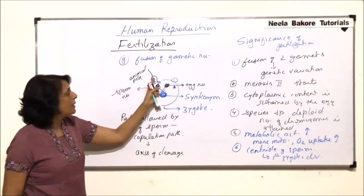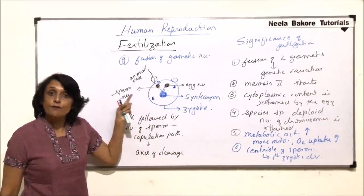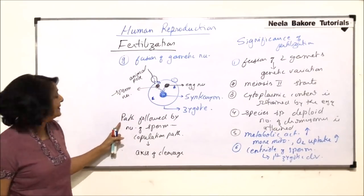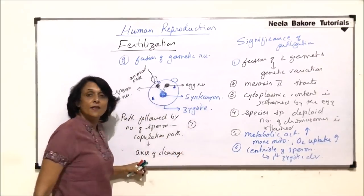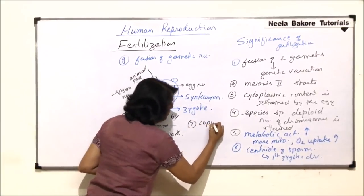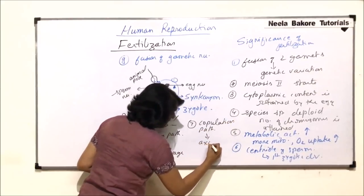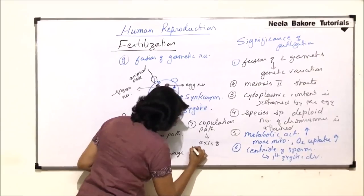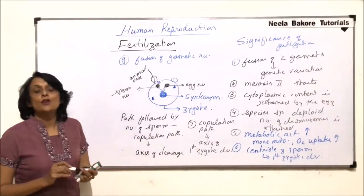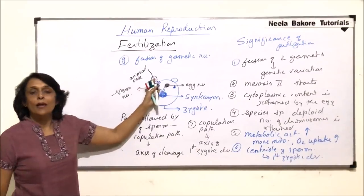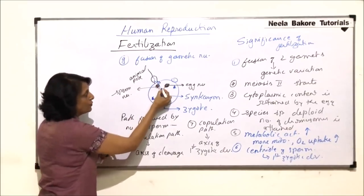Copulation path also we talked about - the path which is taken by the nucleus of the sperm. That copulation path decides the axis of the cleavage. So seventh significant point is copulation path decides the axis of first zygotic division. We know it is going to be through animal pole and vegetal pole. So this is how the path is going to be.